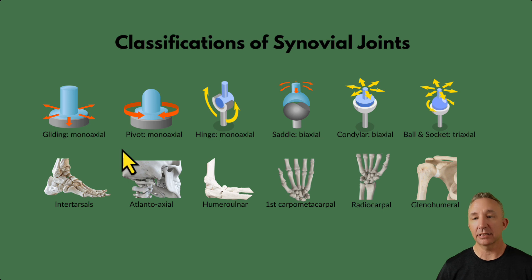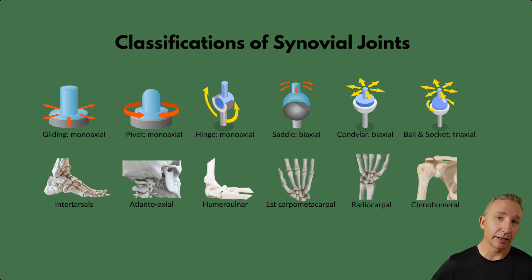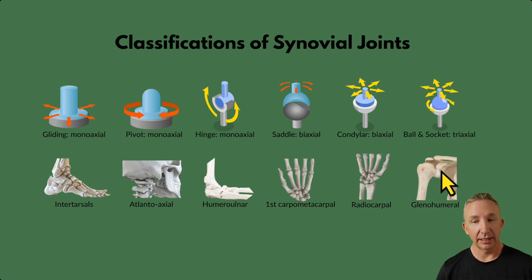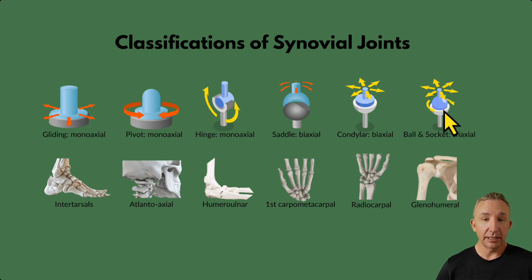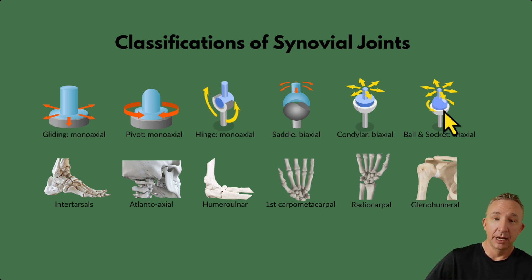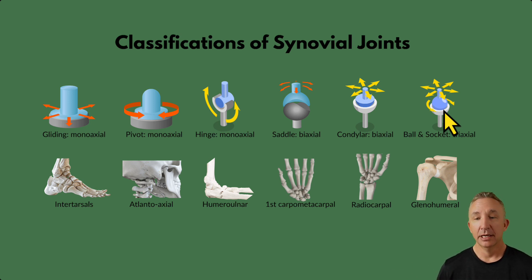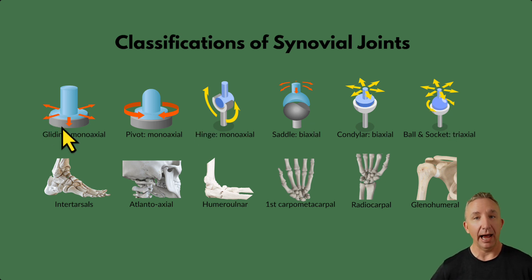Lastly, a ball and socket joint moves in multiple planes, making it triaxial. Examples are the shoulder and hips. The humerus connects to the glenoid cavity of the scapula — a ball in a shallow socket — and can move anteriorly, posteriorly, medially, and laterally. So you can move in multiple directions. This is the classification of synovial joints: all movements created by how the bones are connected within the synovial cavity.